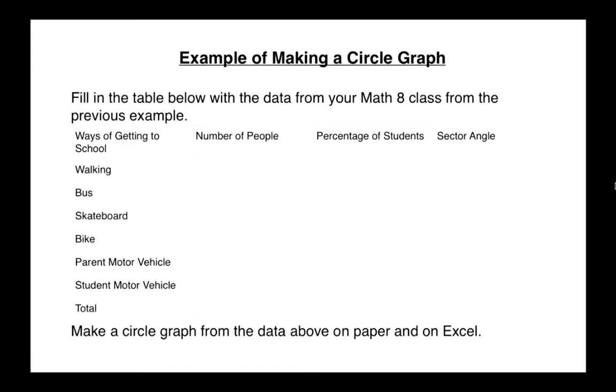So now we're going to look at how do we make a circle graph. I'm going to continue using the data from the one-two class. Here are the number of people from that one-two class who went to school in those different ways. Now what we need to do is first of all add up all of these numbers to get a total number of students in that class and it was 27, and then we need to go on to the next column and calculate the percentage of students that walk, take the bus, skateboard, bike, get to school by parent motor vehicle or student motor vehicle.